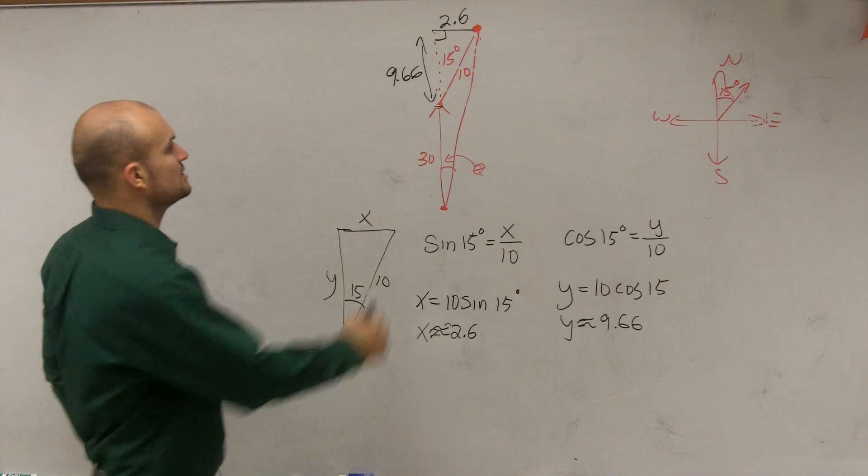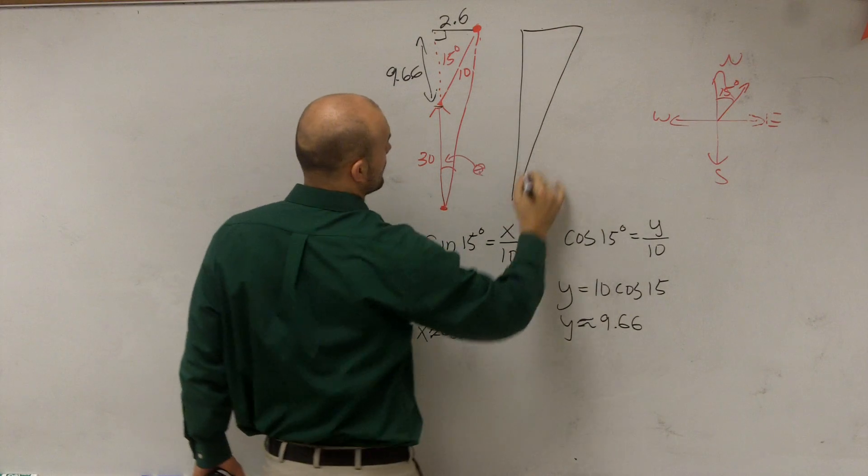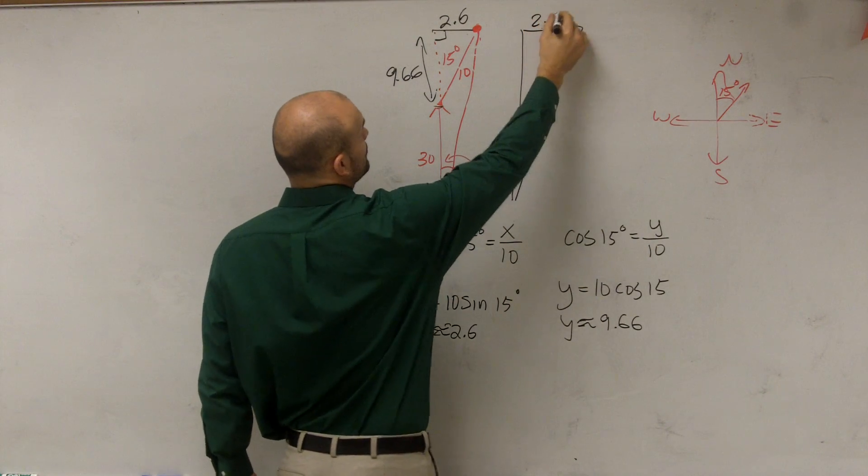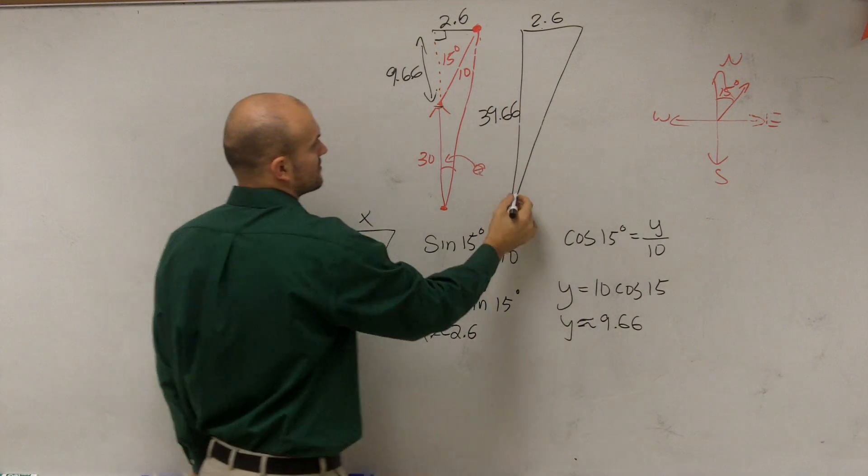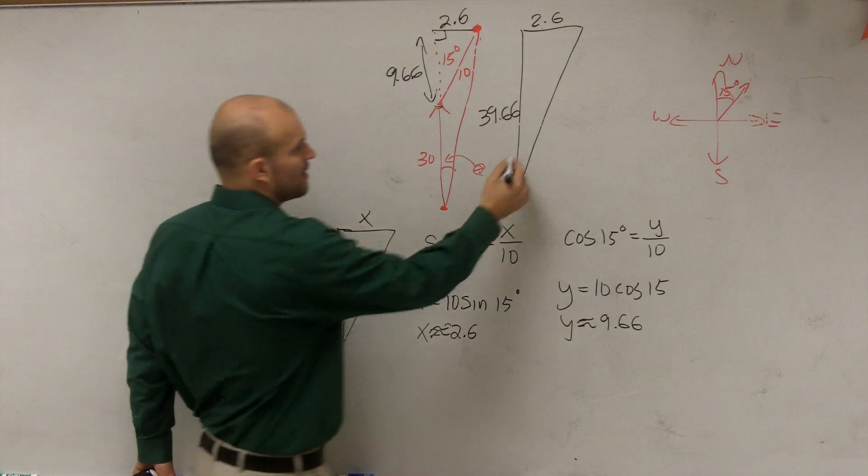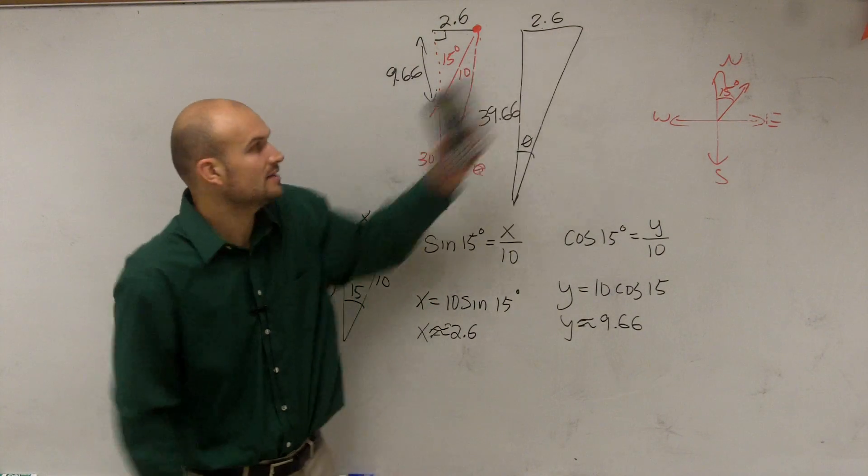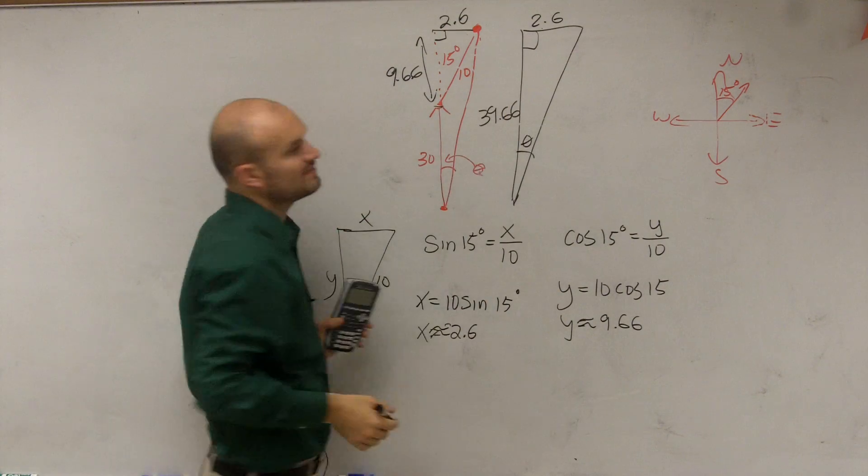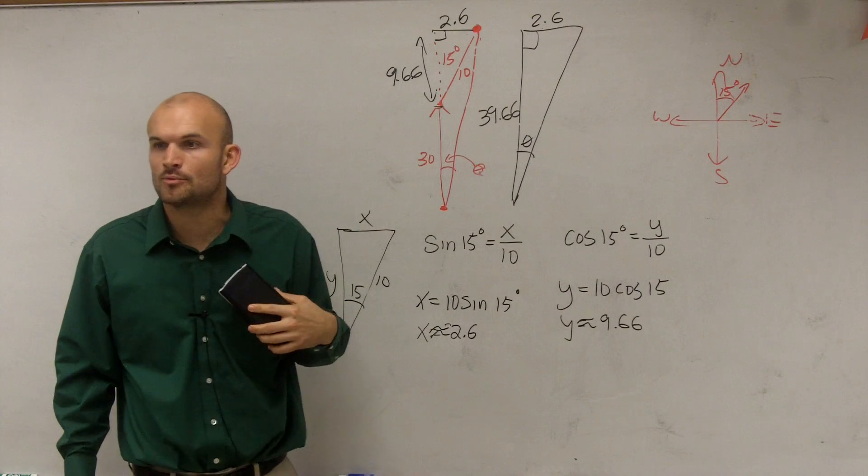So therefore, what is the true distance? So now if I was going to kind of write out this long triangle, we know that this distance is 2.6, and this one is 39.66. Does everybody see that, what I did? Then I want to figure out what theta is. So if I have the opposite of theta, because here's my right angle, if I have the opposite of theta and I have the adjacent, which trigonometric function is going to help me do that? Tangent.